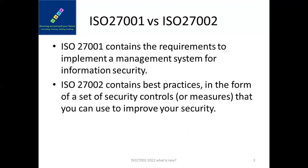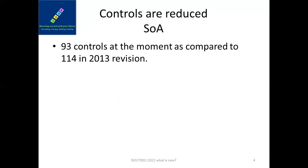ISO 27001 is the certifiable standard, and the applicability will be different for each organization. For example, ISO 27017 is for cloud security, 27034 is for application security, and 27035 is for security incident management. All these are guidance documents and your certifiable standard is ISO 27001. A good consulting organization will consult all this guidance documentation when implementing ISO 27001 or towards your certification. ISO 27002 contains best practices and a set of security controls to improve your security.